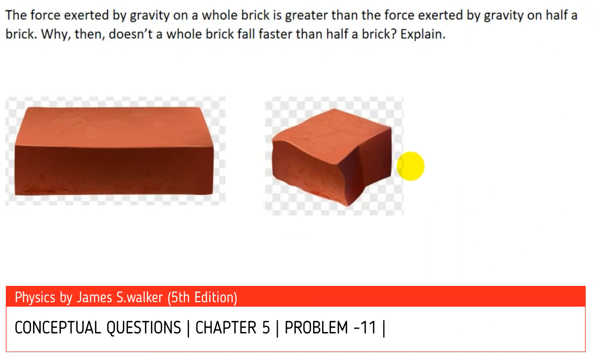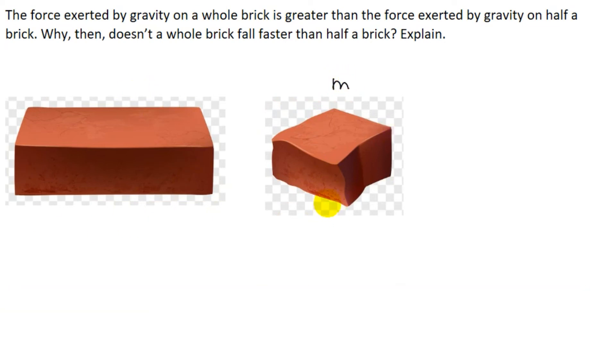In this problem, we have two bricks: a half brick and a full brick. Let the mass of the half brick be m and the full brick be 2m. The gravity force on the full brick is greater—why doesn't it fall faster than the half brick?